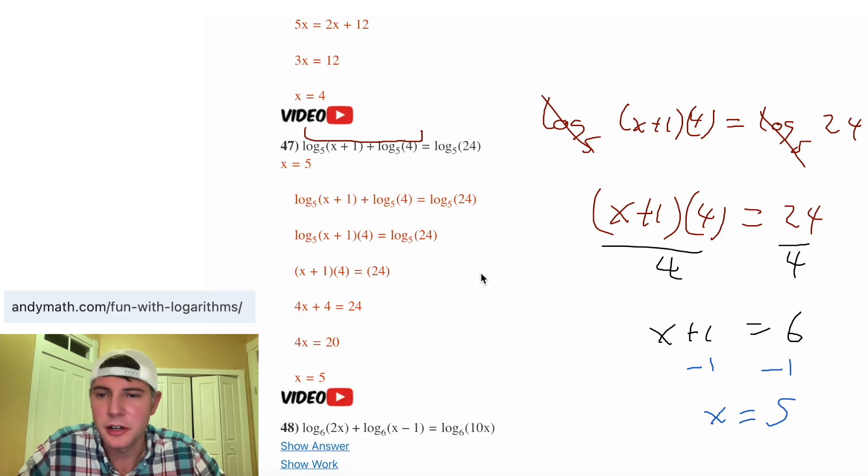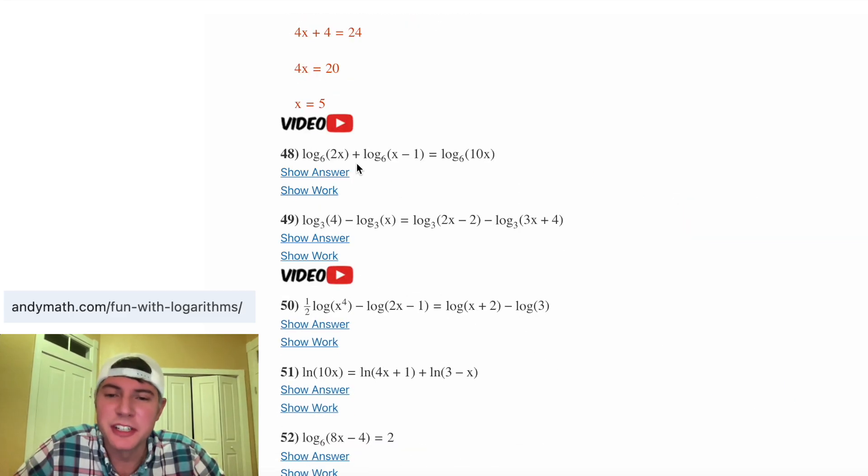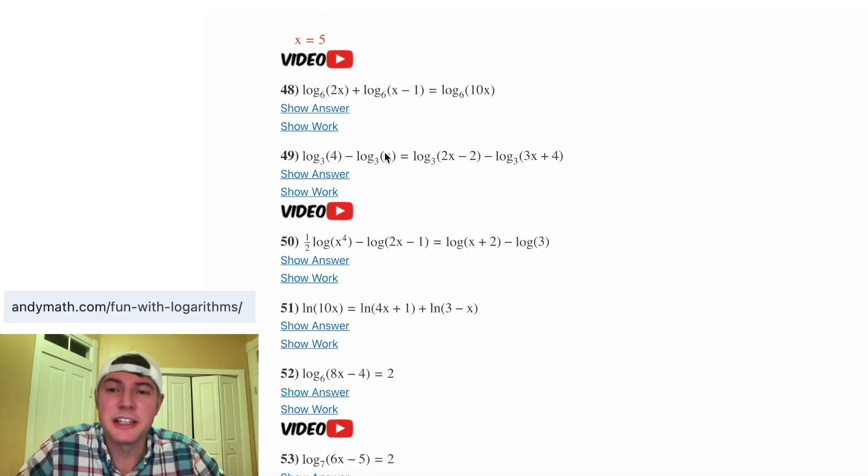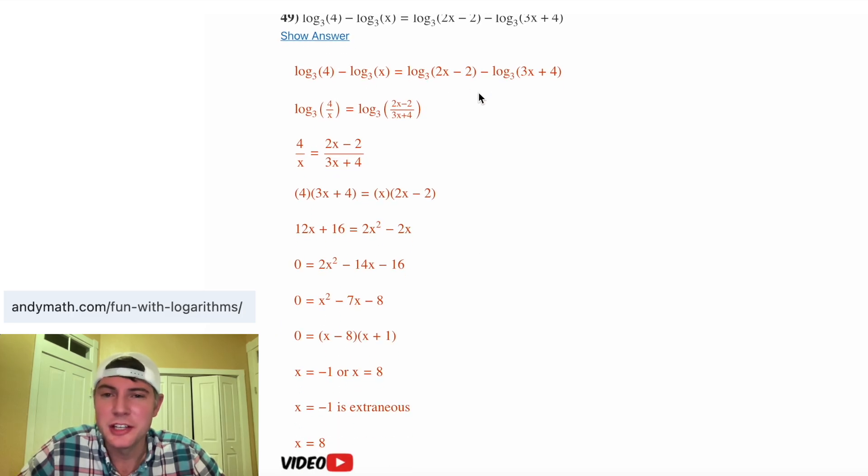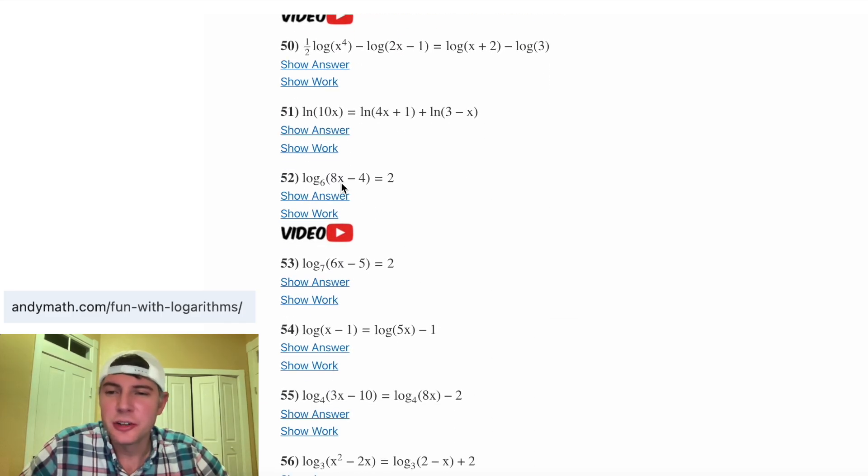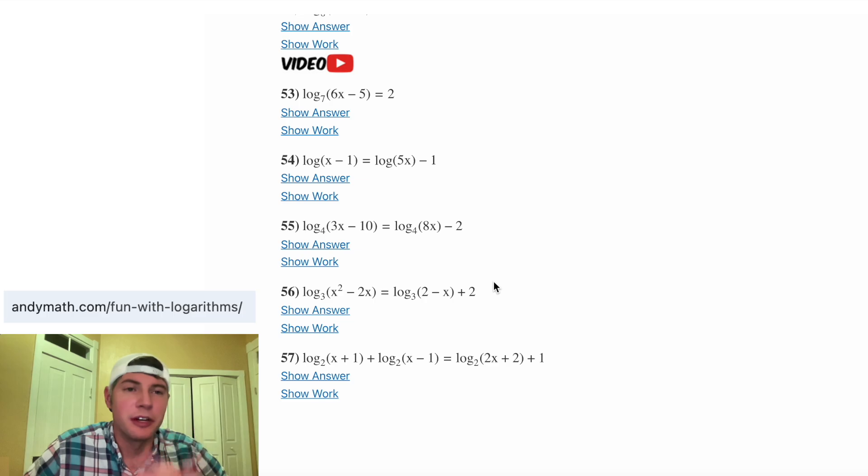And this also includes a button for a video. Here's another one where you'll condense them. Here's ones where you're going to condense both sides independently, and then you can set them equal. Here's all the work for that. Each of these get condensed to a single log, and then you set these things equal to each other, cross multiply and solve. And each of the rest of these falls into one of those three formats. And if you get stuck, you can just click on show work.